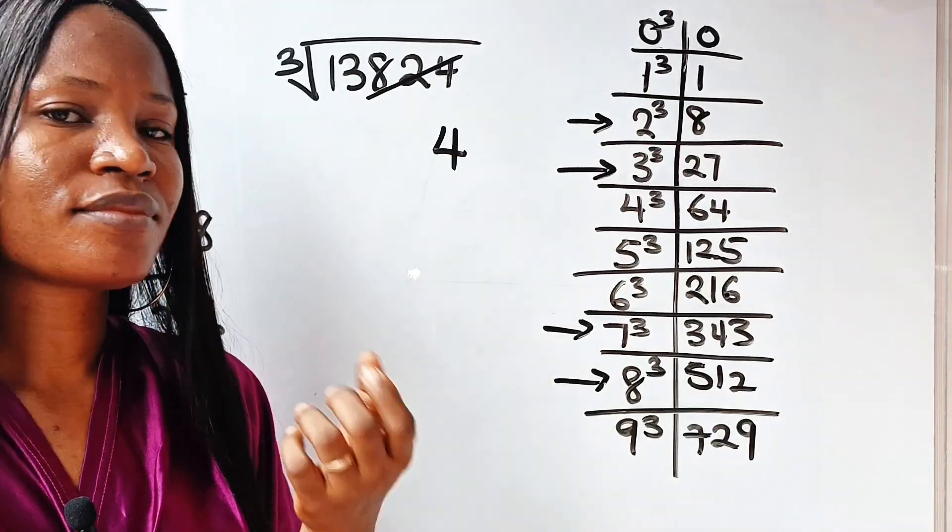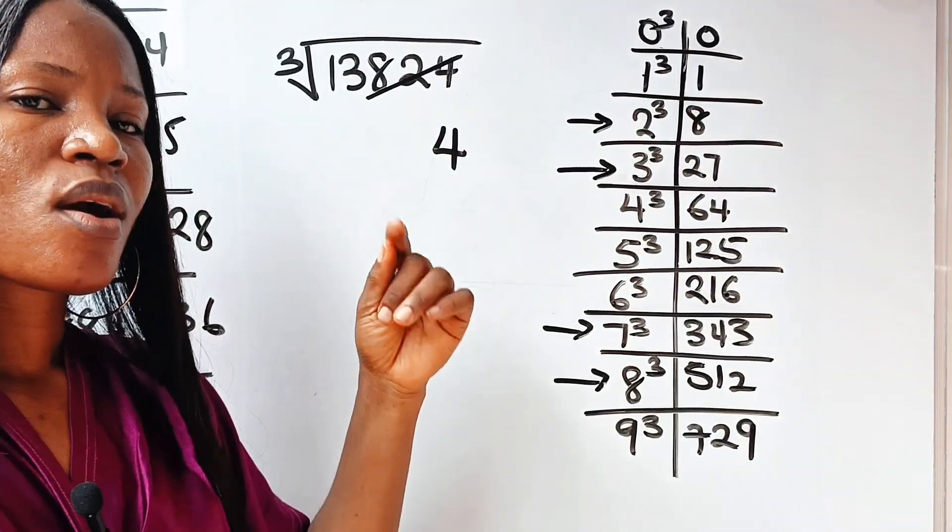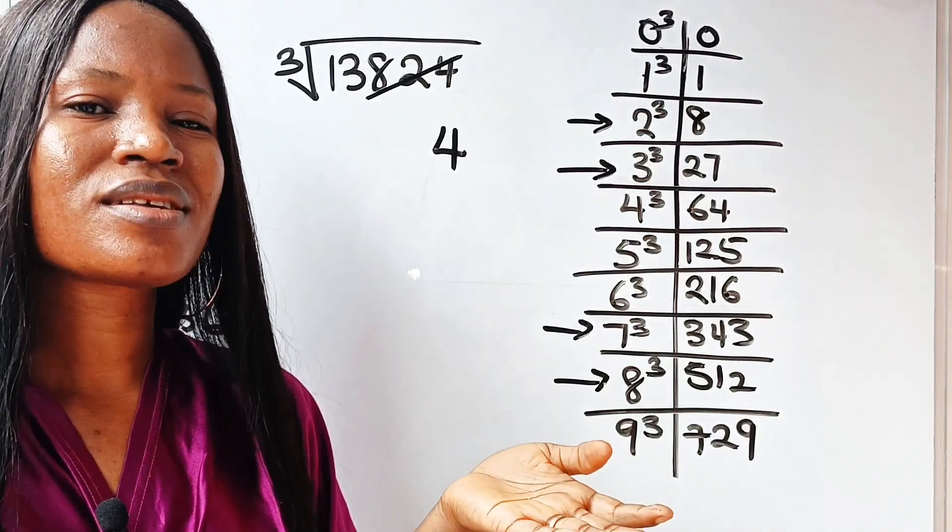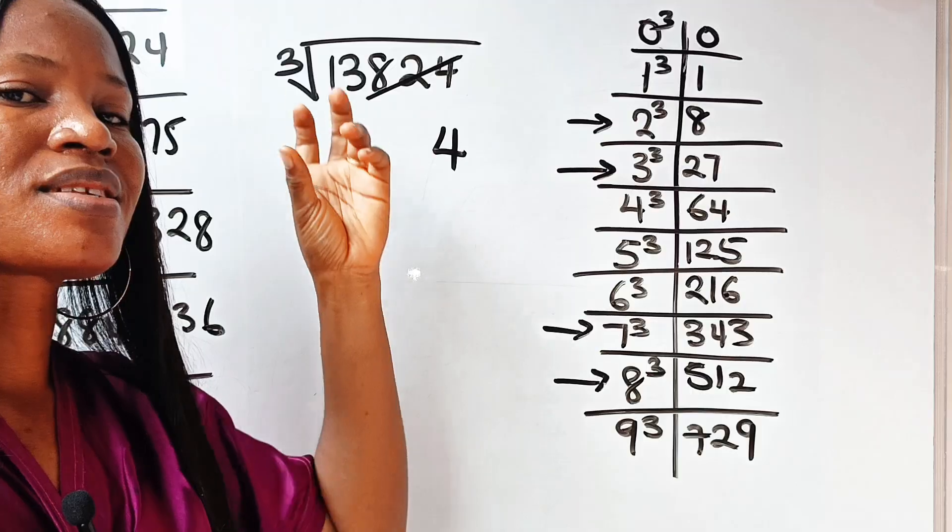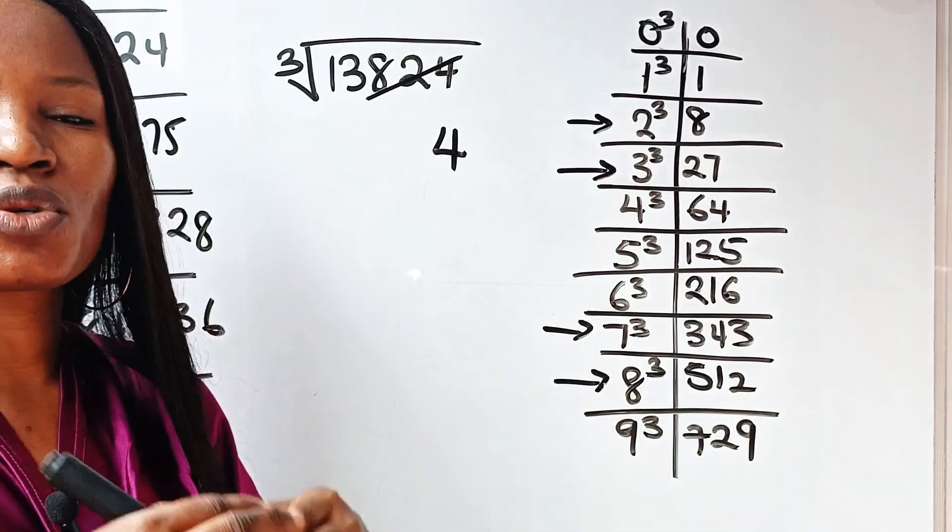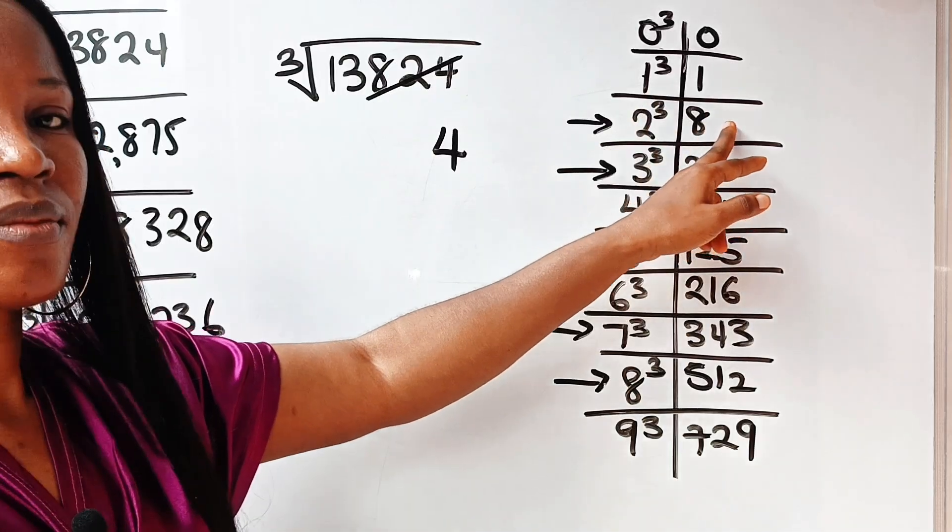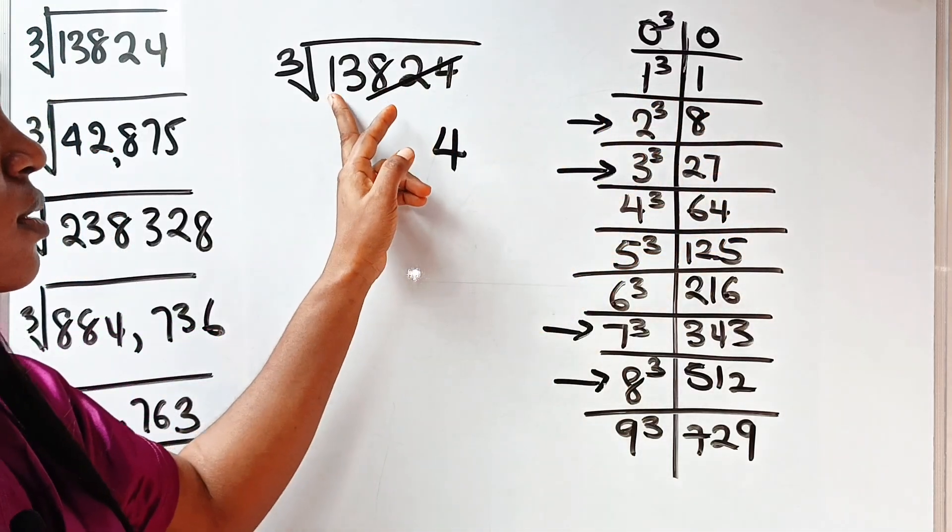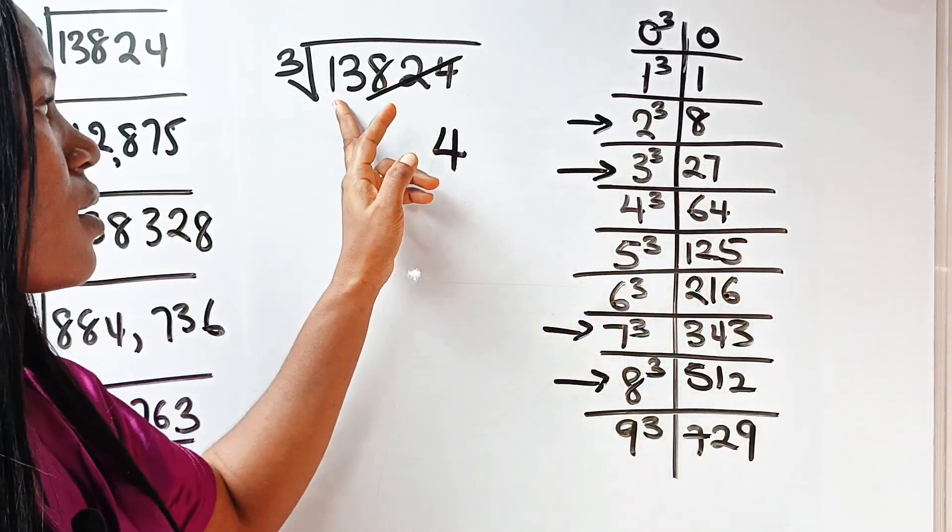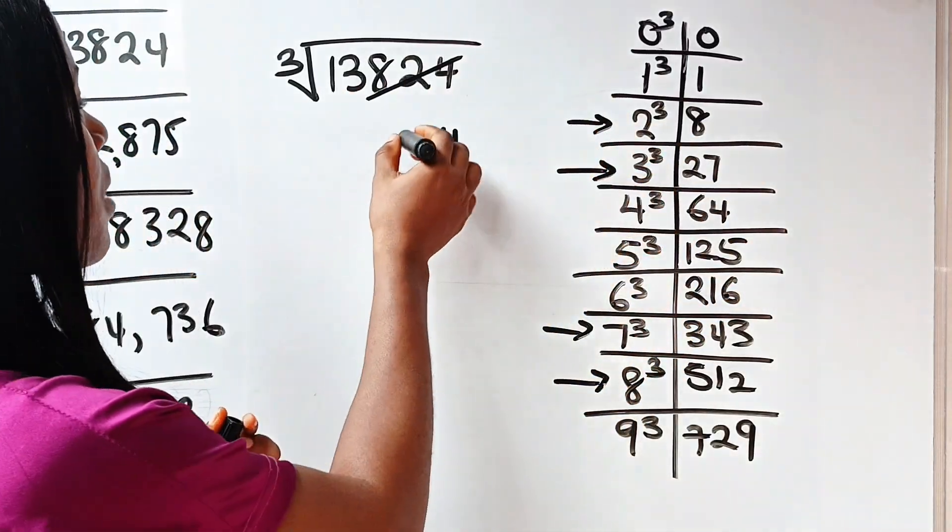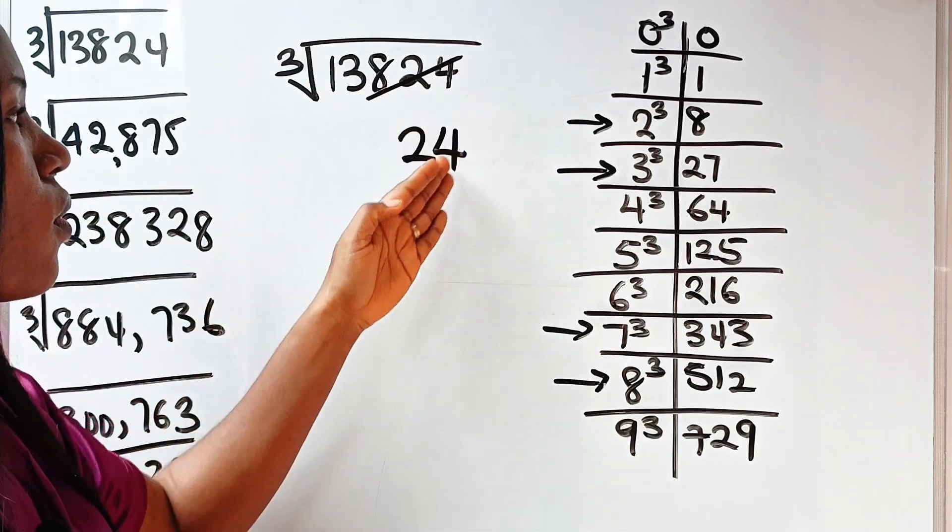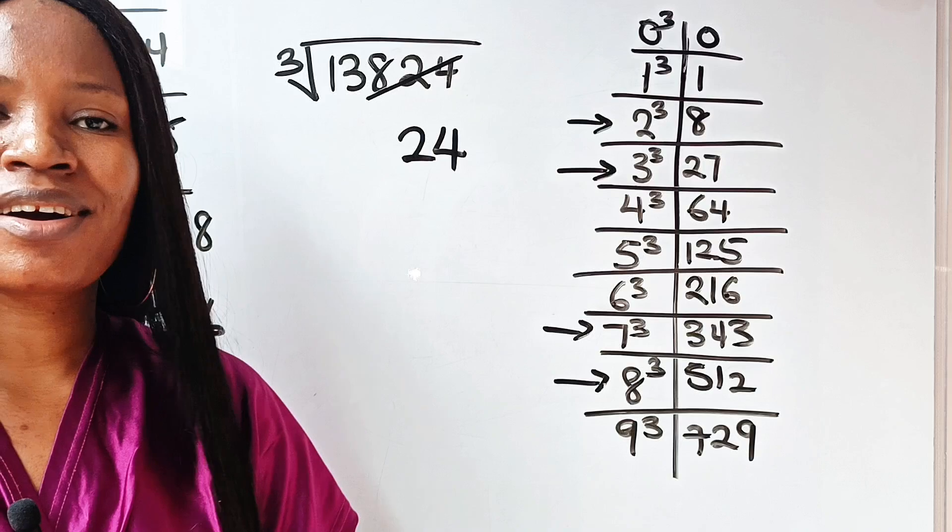So we are now left with 13. Very small number. So what do we need now? What number are we going to square to get 13? Very easy. That is, you are going to get a number that is close to 13 but not more than 13. And that number is just 2. 2 cubed is 8. It's not more than 13. It cannot be 3. 3 cubed is 27. 27 is more than 13. So the answer is 2. So it simply means that cube root of 13,824 is 24. You can press your calculator.